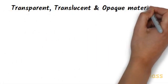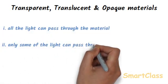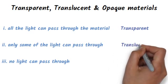When light falls on a material, then three things can happen: either all the light can pass through the material, or only some of the light can pass through the material, or no light can pass through the material. So, depending on their behavior towards light, all the materials can be classified as transparent, translucent or opaque.